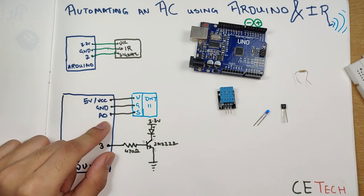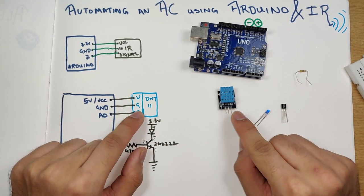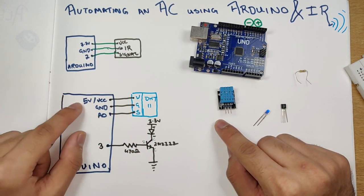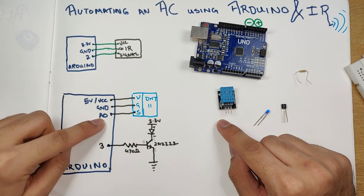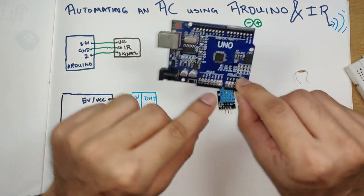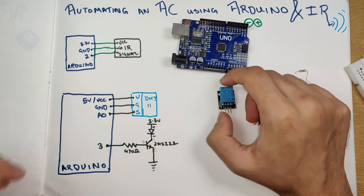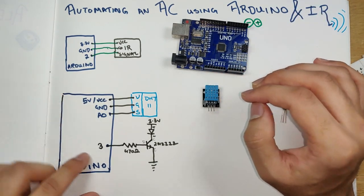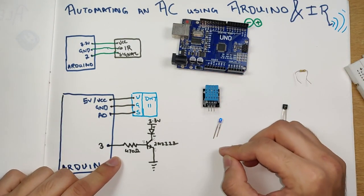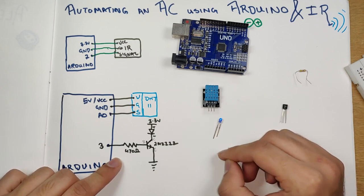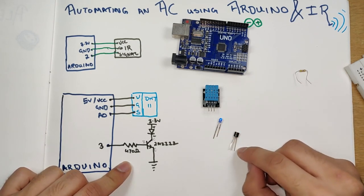The DHT11 connections are straightforward: its voltage pin, ground pin, and signal pin connect to the Arduino's 5V pin, ground pin, and analog pin A0 respectively. The infrared LED connections are more complex since the IR LED will be driven by an NPN transistor — the 2N2222 — controlled via digital pin 3 on the Arduino.